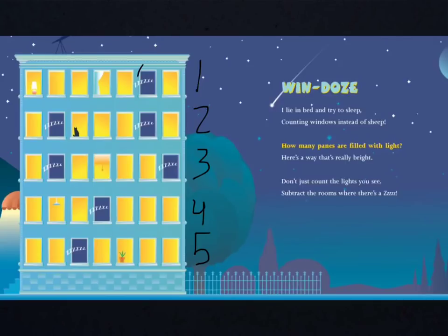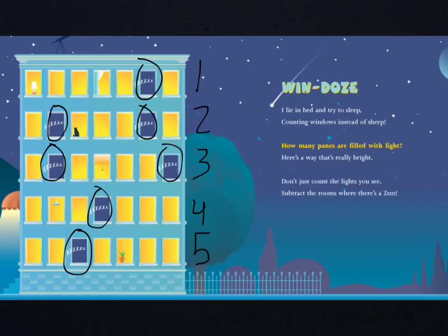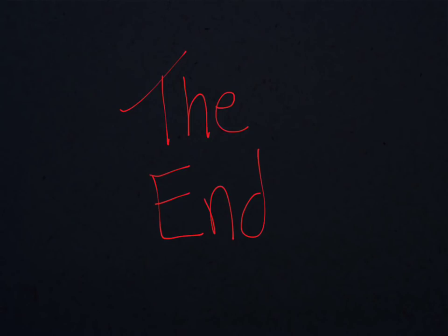Now, I have 1, 2, 3, 4, 5, 6, 7 windows without light. So, let's take the total from earlier and take away those 7 windows with the lights off. And that, my friends, is where we will end. Good night.